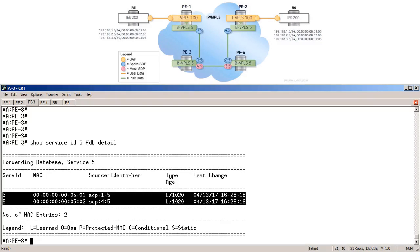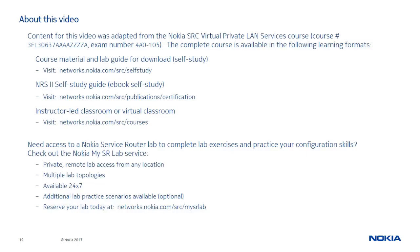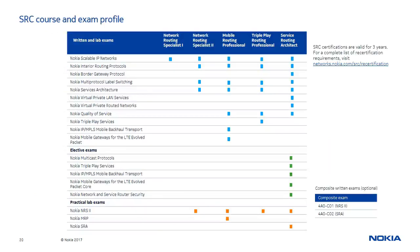I hope you enjoyed this video on PBB with HVPLS. Thanks for watching and see you next time. Content for this video was adapted from the Nokia Virtual Private LAN Services course. You can access the complete course via any of the three learning formats shown on this page, as well as get remote private access to a Service Router lab to complete the course lab exercises. If you are interested in obtaining an SRC certification, this table identifies the recommended courses and required exams for each of the 5 available certifications in the program.